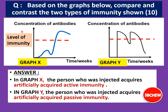Let's have a look at these two graphs. Graph X has a curve that goes up, comes down, and then goes up again to a very high level. The shape of this graph tells us it's about artificially acquired active immunity. Whereas for Graph Y, the shape is different — it goes straight up and then comes down very quickly, and after another injection, goes straight up again. This shape — like a shark's fin — is for artificially acquired passive immunity.